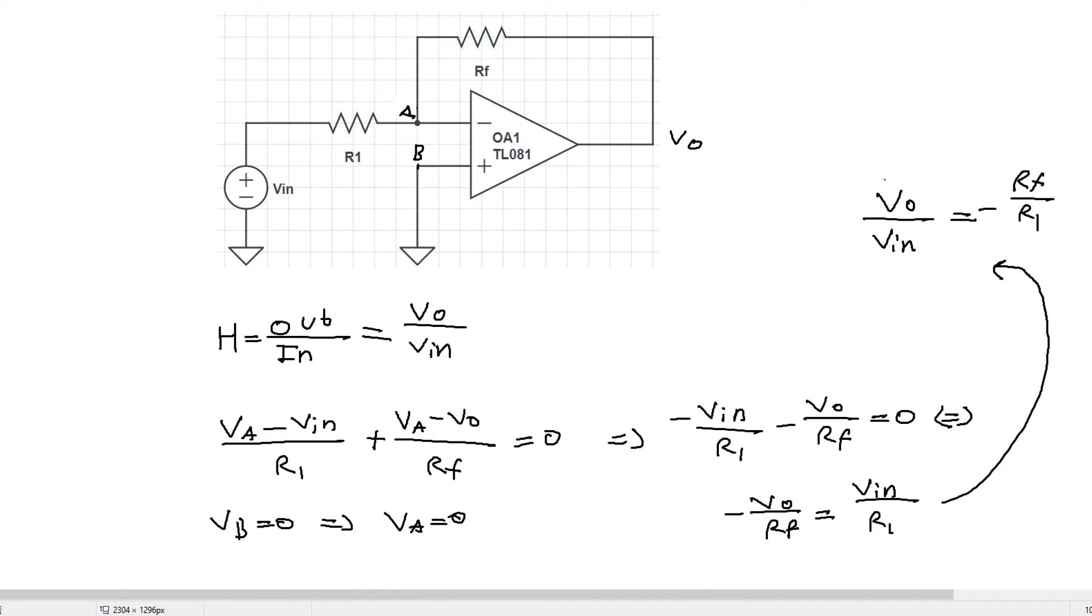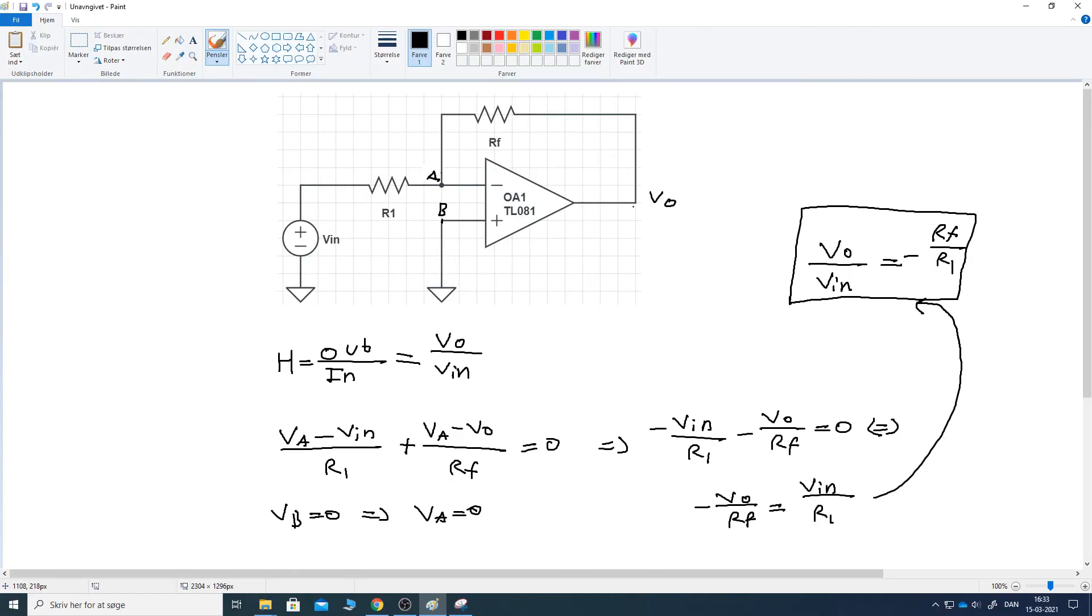And we recognize this expression as the transfer function of this circuit because we have output over input. And therefore we have just found the DC gain of this operational amplifier circuit, and that is minus RF over R1. So this is a negative or an inverting amplifier.